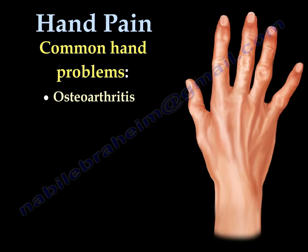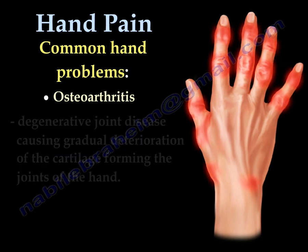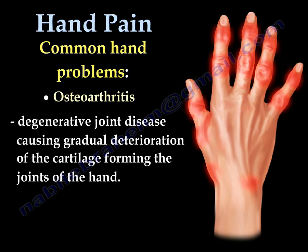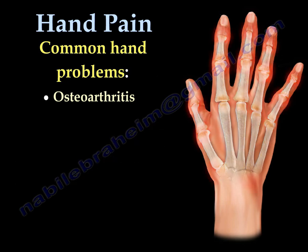Osteoarthritis typically affects the interphalangeal joints of the fingers and thumb. It is a degenerative joint disease of unknown etiology causing gradual deterioration of the cartilage forming the joints of the hand and fingers.